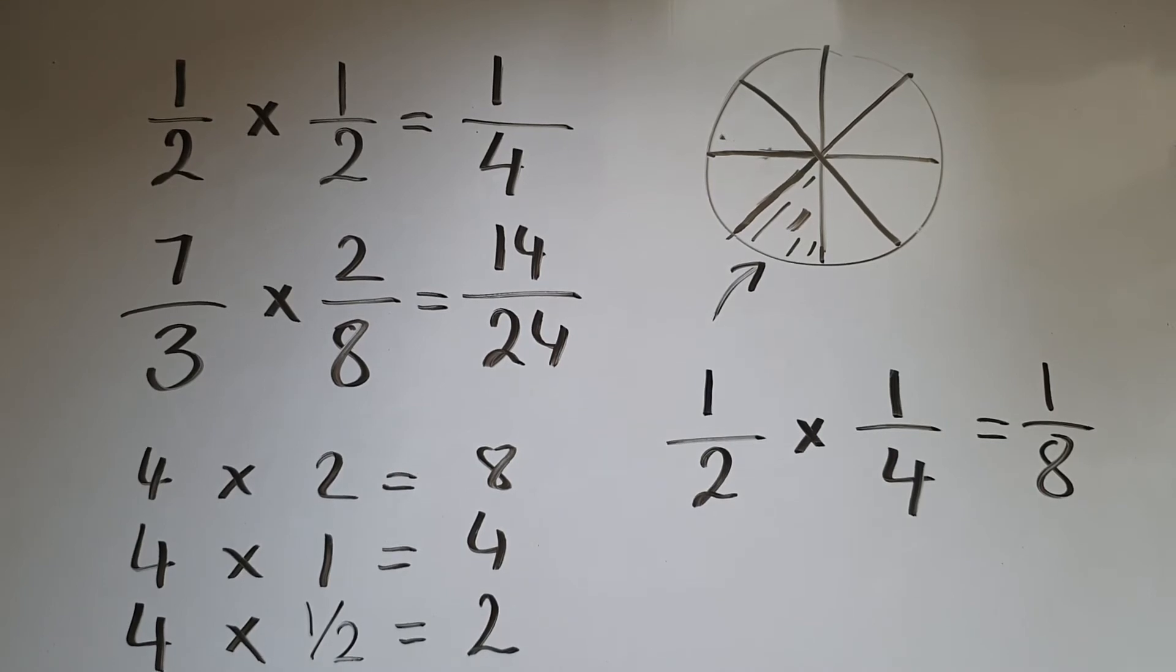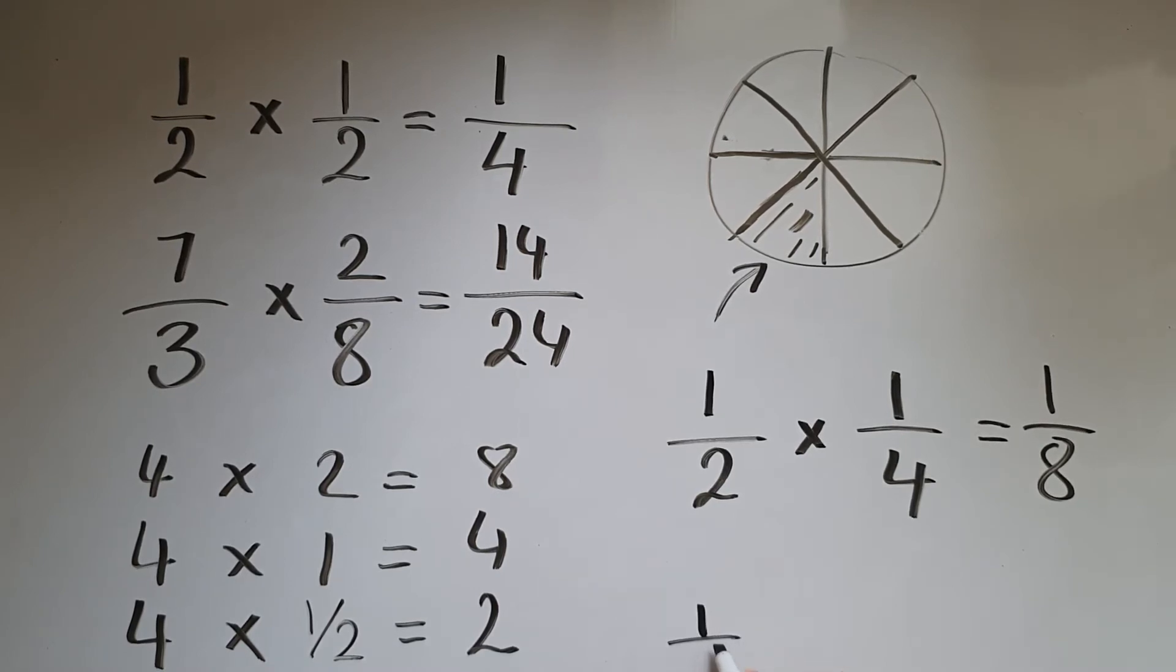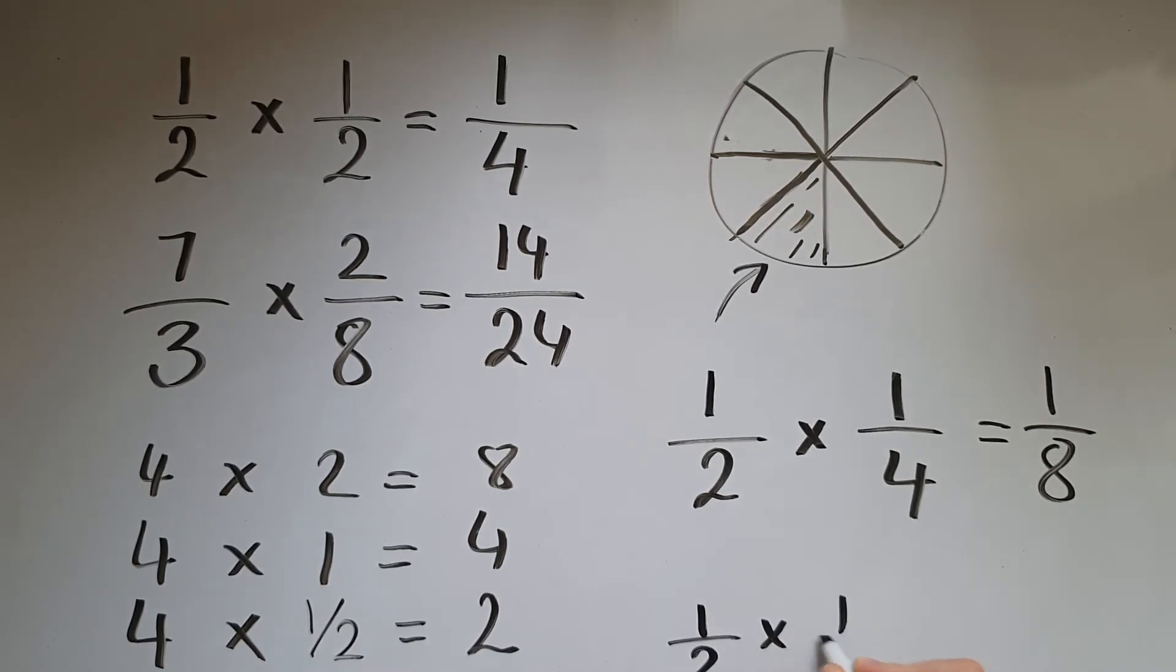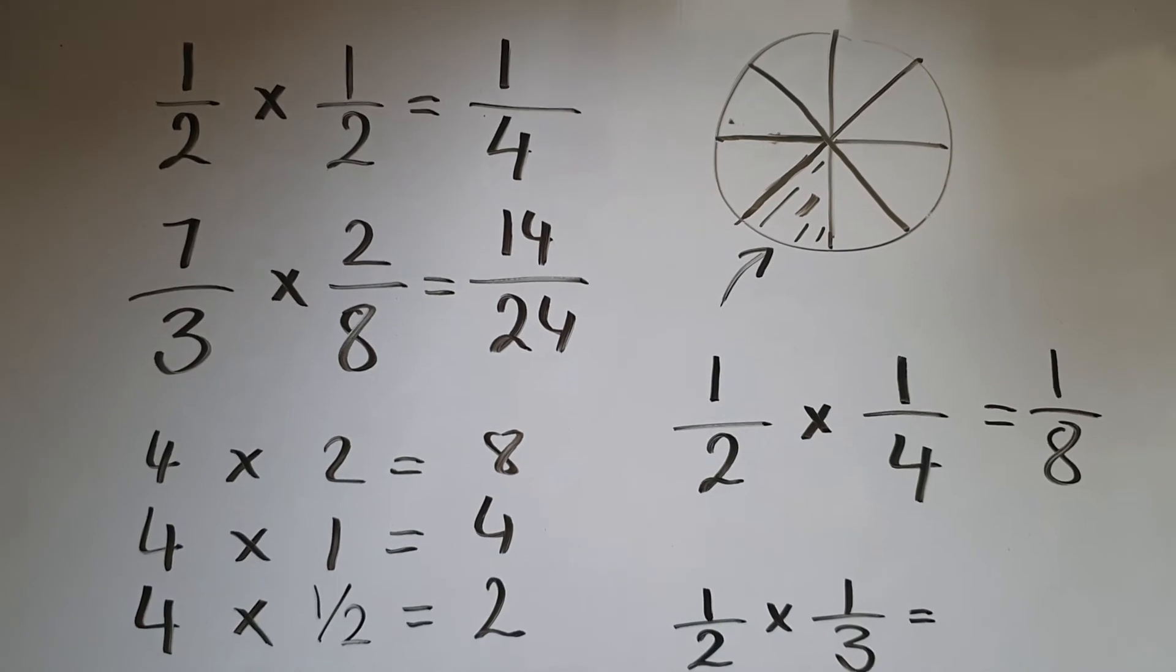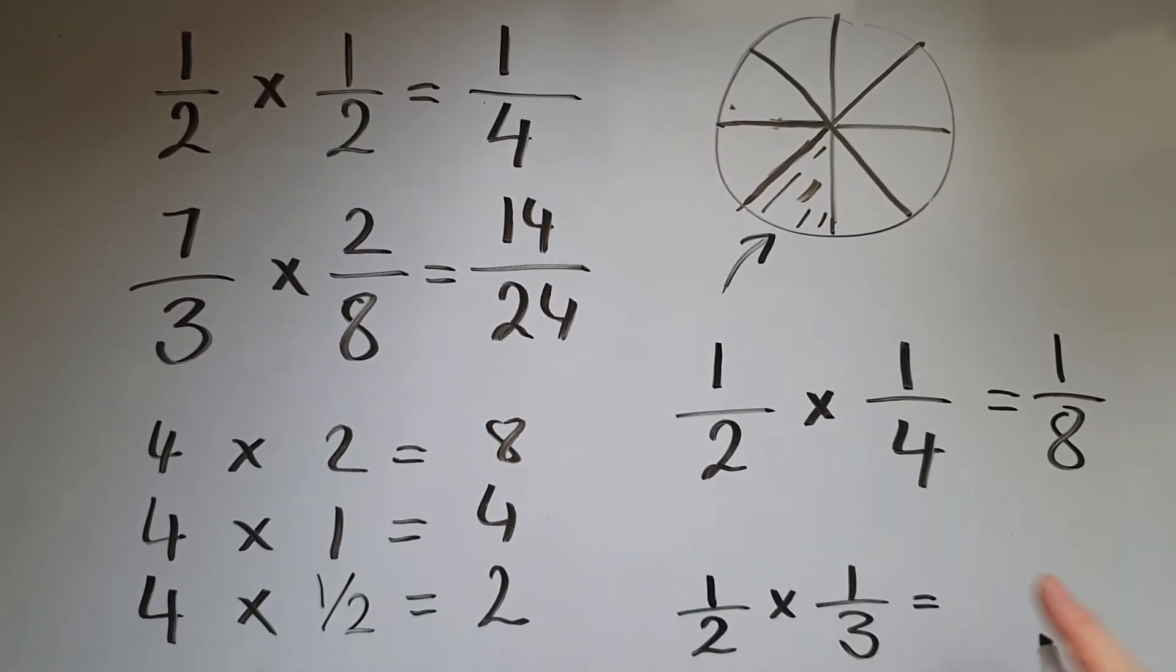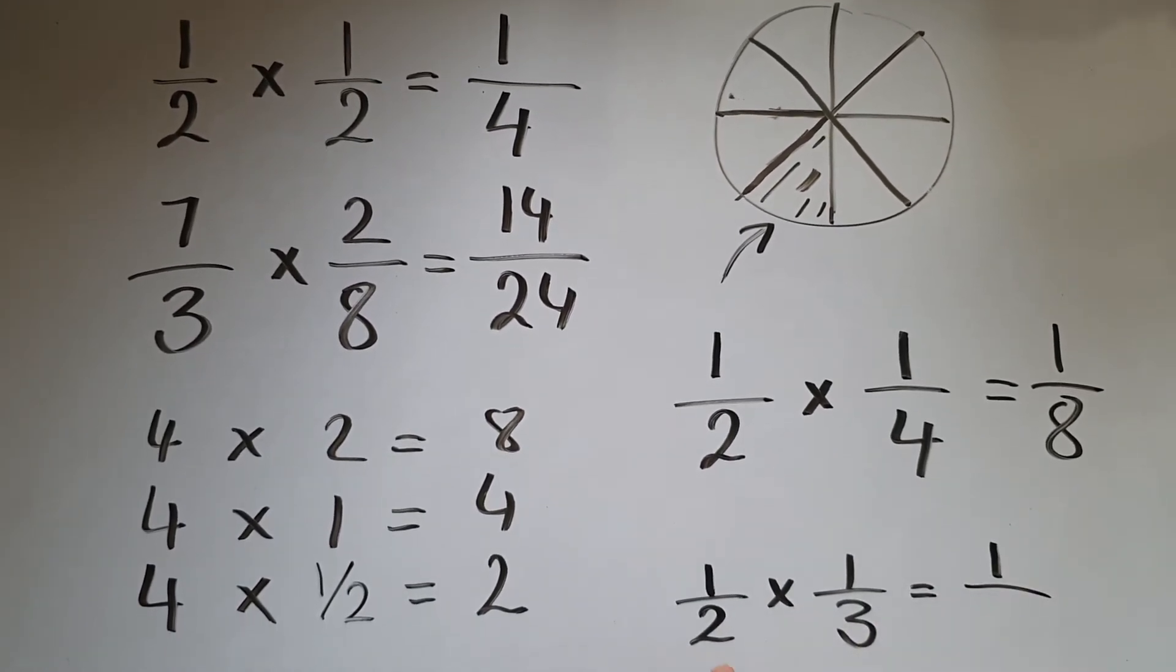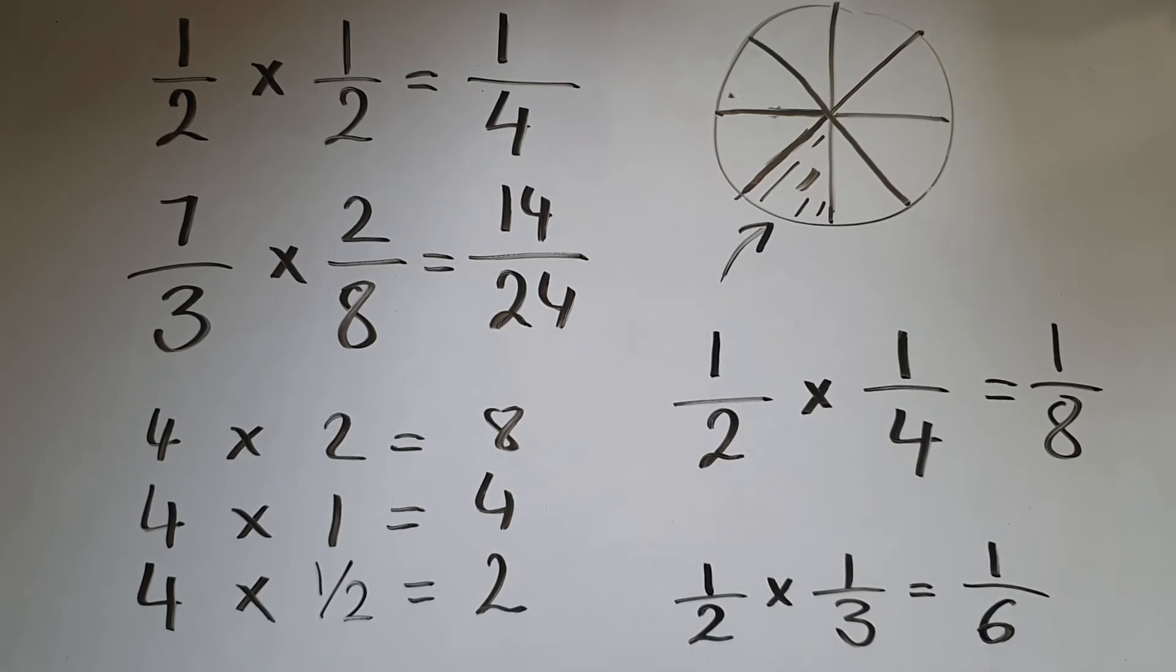So if I want to work out half of a third, I know the answer is going to be one sixth, because one times one is one and two times three is six. But what does that mean practically?